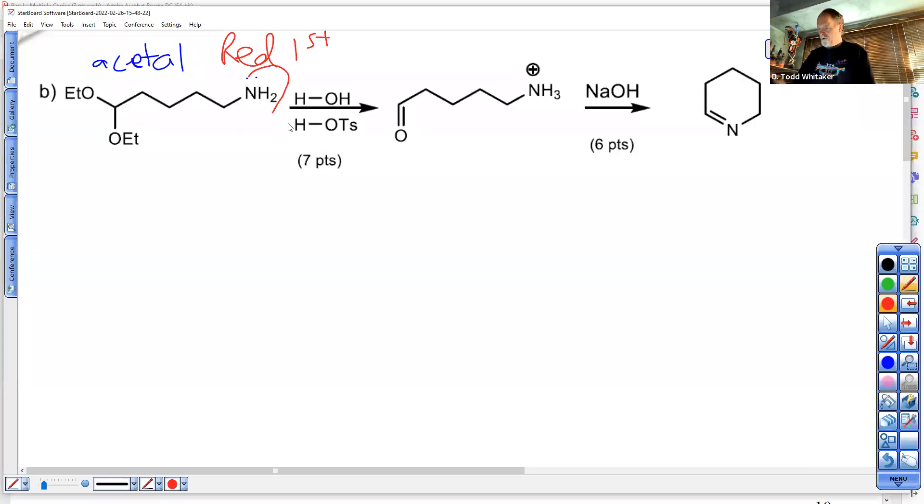Protonate the NH2 with the strong acid, and then we'll talk about hydrolysis. Well, since we're doing two colors, and we've got to make those things leave, those OETs. To do so, you've got to protonate them first. So this would be toluene sulfonic acid number two.